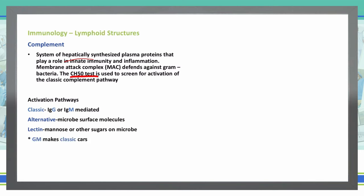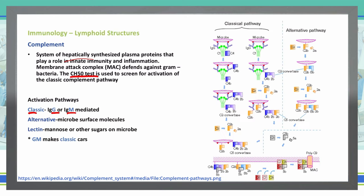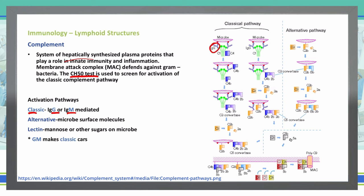One thing to remember is that GM makes classic CARs — meaning the classic pathway is IgG and IgM-mediated. Looking more closely at these pathways: the classic pathway is IgG or IgM-mediated and can also be activated by lectins or other sugars on the microbe. The alternative pathway is activated by microbe surface molecules.